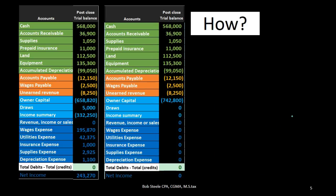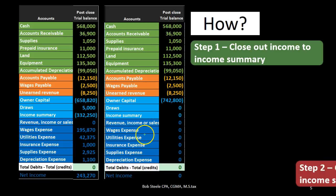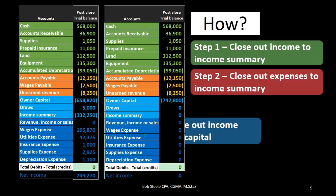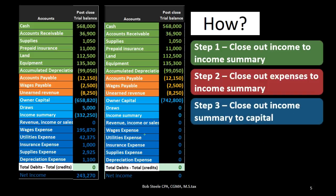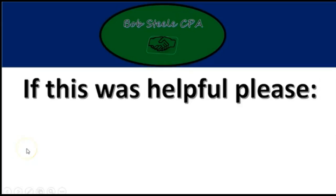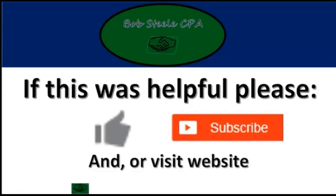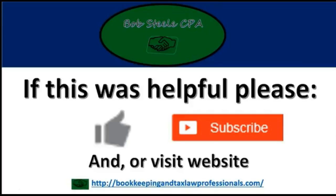That's the first step of our four-step process and this is where we're at right now. We have now closed out the income. Next time we're going to close out the expenses to the income summary, then take the income summary — which will have net income — and close it out to the capital account, which is where we ultimately want it. Then we're going to close out draws to the capital account. We'll see you next time.